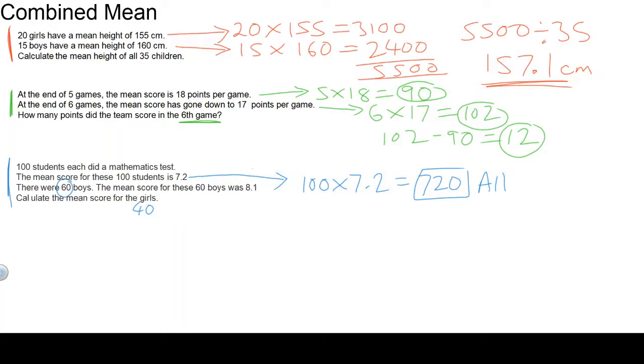Now let's look at the third sentence. This is talking about boys. 60 boys with a mean score of 8.1. So their total score is 486. That's for boys. Now for girls.